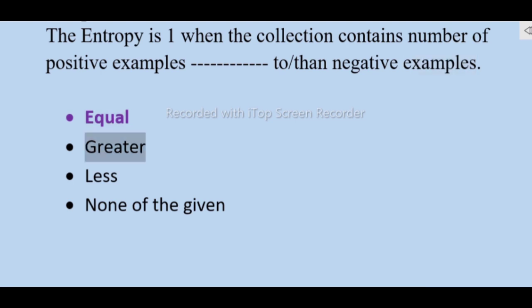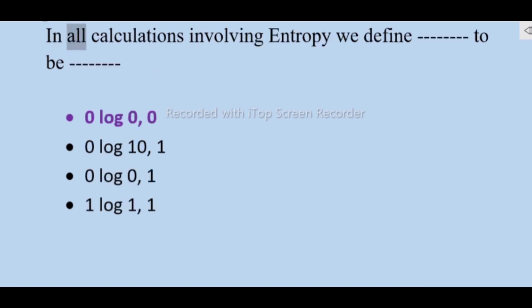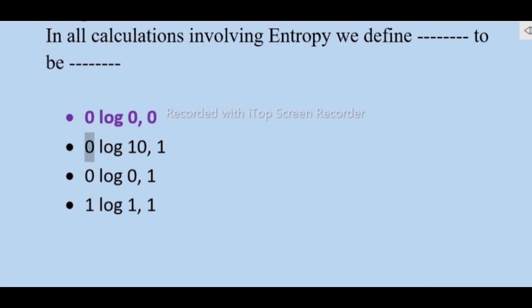In all calculations involving entropy we define: 0 log 0 = 0, 0 log 1 = 0, 1 log 0 = 1, 1 log 1 = 1.